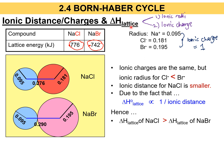Since the relationship between enthalpy of lattice and ionic radius is inversely proportional, and the relationship between enthalpy of lattice and ionic charge is directly proportional — because Cl⁻ has a smaller ionic radius than Br⁻ — we can deduce that the enthalpy lattice of NaCl is greater than the enthalpy lattice of NaBr.